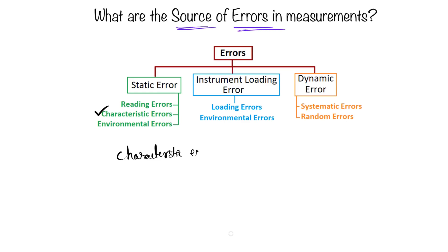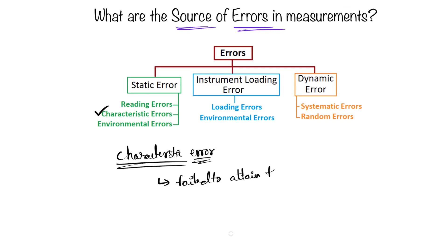The second sub-type of static error is characteristic error. Every instrument has a theoretical performance, and when it fails to attain that theoretical performance, it is considered a characteristic error.